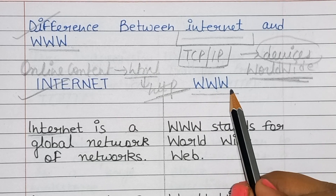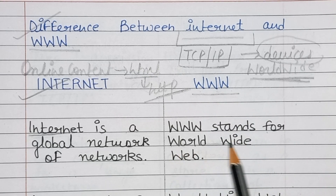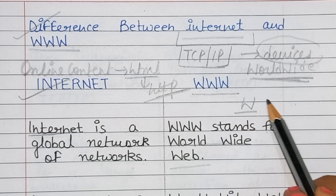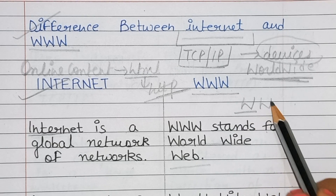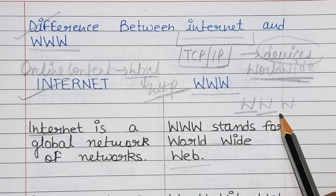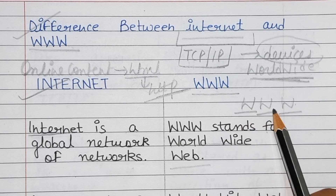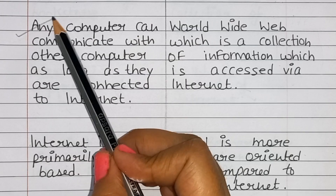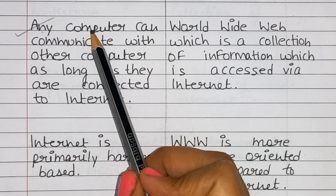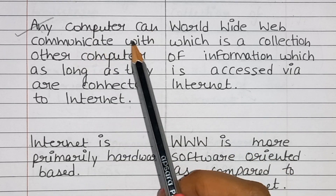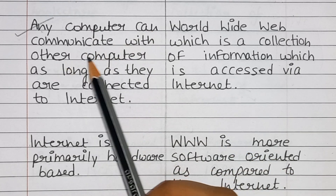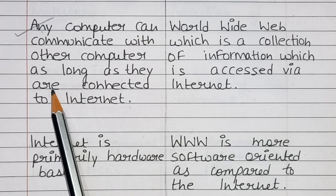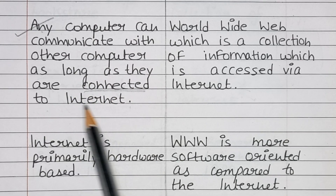WWW stands for world wide web — W for world, W for wide, and W for web. Next difference: any computer can communicate with another computer as long as they are connected to the internet.